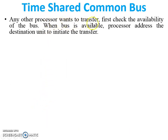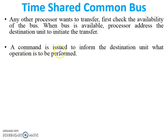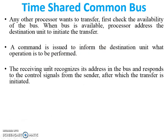Any other processor that wants to transfer data first checks the availability of the bus. If the bus is not available, it is in idle mode. When the bus is available, the processor addresses the destination unit to initiate the transfer. A command is issued to inform the destination unit what operation is to be performed. When the destination unit receives this command from the sender, the receiving unit recognizes its address on the bus and responds to the control signal from the sender, after which the transfer is initiated. When the source gets the response from the receiver, the transfer process proceeds.